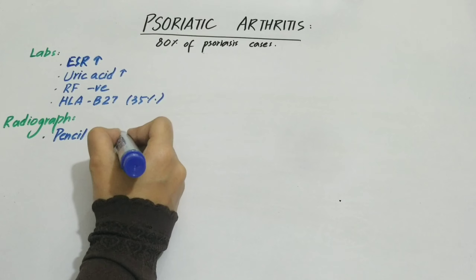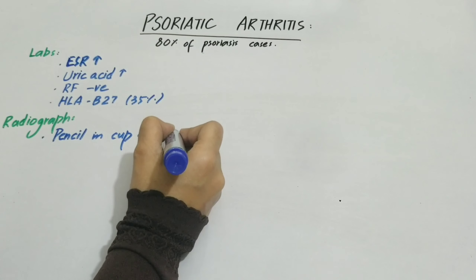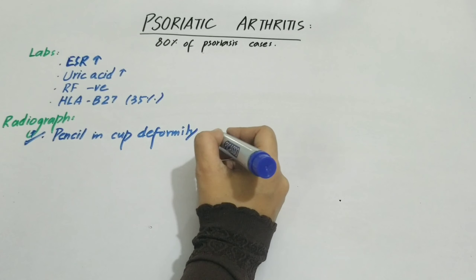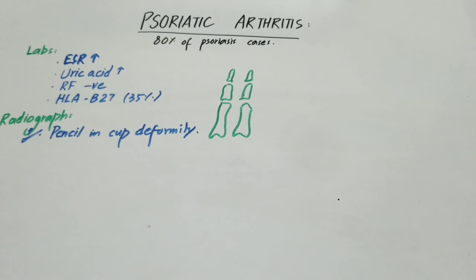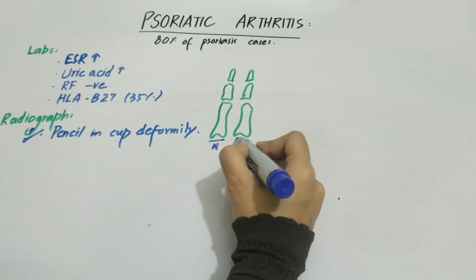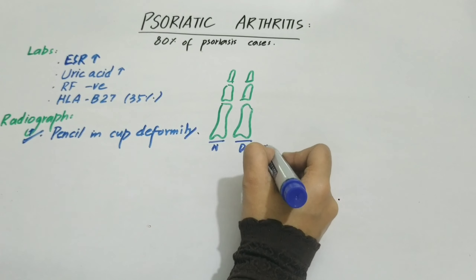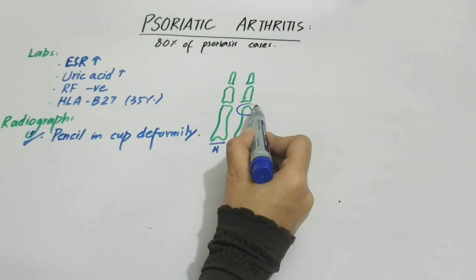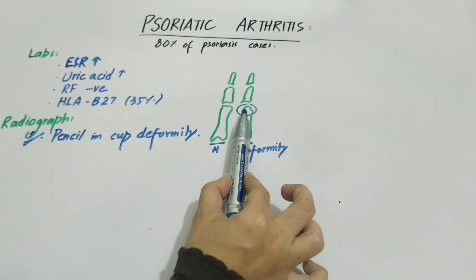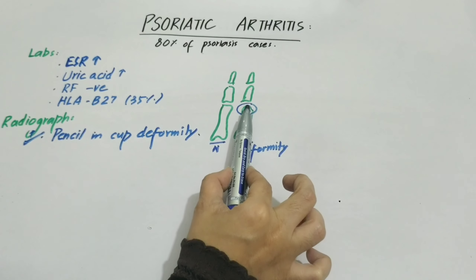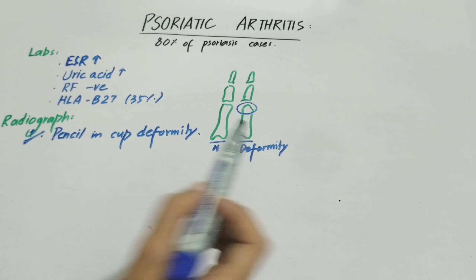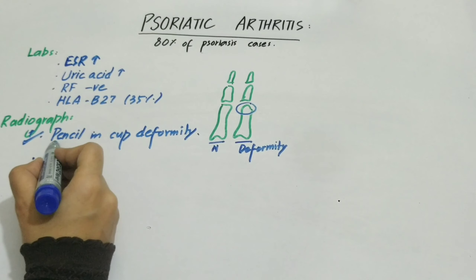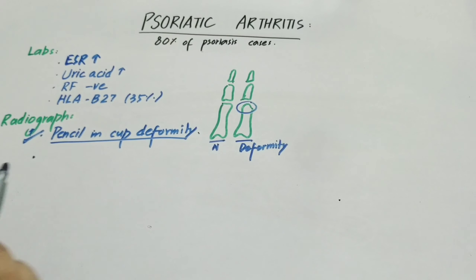For radiographs, the first finding is pencil-in-cup deformity, which is seen in arthritis mutilans. We have the thumb and middle finger as examples. In pencil-in-cup deformity, there is a cup shape and bone prominence that looks like a pencil inserted into a cup. This erosion pattern in the joints is characteristic of psoriatic arthritis, also called arthritis mutilans.